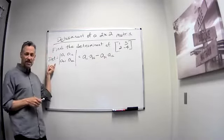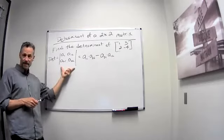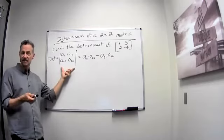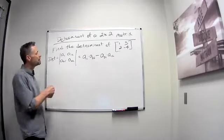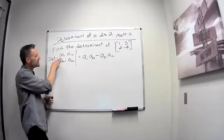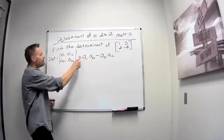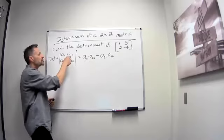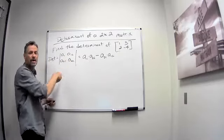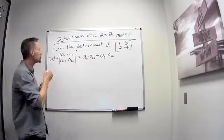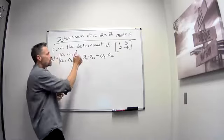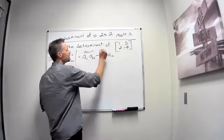The definition of a determinant — notice they put straight lines to signify we're taking the determinant. It's just A11 times A22 minus A21 times A12. So what we do is we multiply down the diagonal, multiply those together, but then we go minus, and then we multiply up the diagonal.